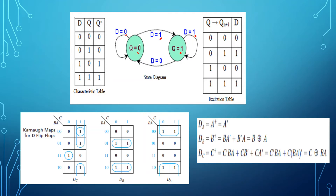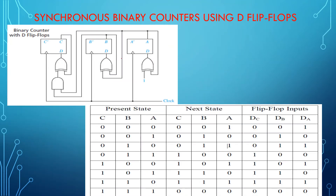Moving on, let us note down the present state and the next state. I need to count from 0 to 7, so the present states are 0, 1, 2, 3, 4, 5, 6, and 7, and the next states are 1, 2, 3, 4, 5, 6, 7, and 0 respectively. Later we need to check out what flip-flop inputs have to be given for each state transition. Let us consider the state of C.